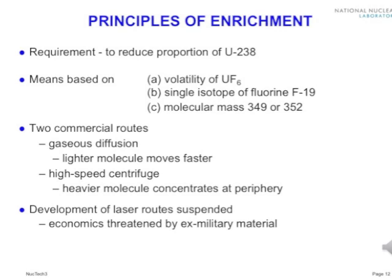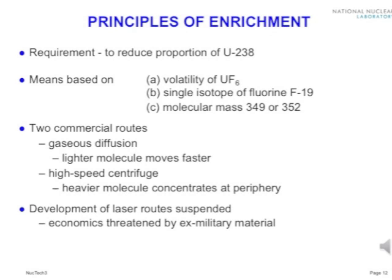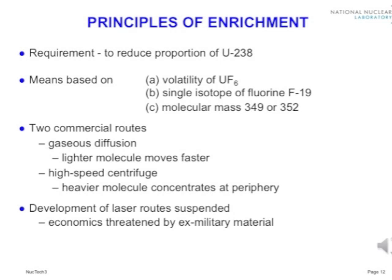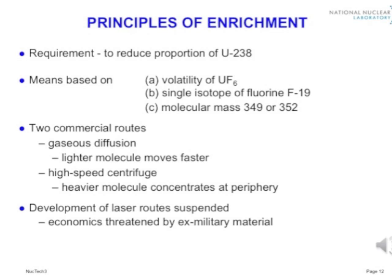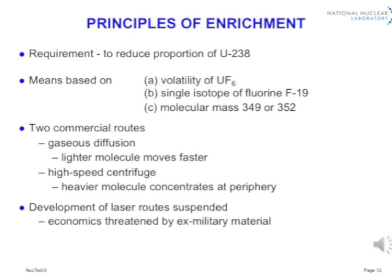Both enrichment methods depend on the fortunate coincidence that uranium forms a volatile hexafluoride, and that fluorine has only one stable isotope of mass number 19. Consequently, the processes are concerned with only two molecular masses: 349 and 352. In the vapour phase, the lighter molecules on average move faster by a factor of 1.0043 — the square root of the mass ratio. When uranium hexafluoride is passed through a porous membrane, the emerging vapour has a very slightly higher proportion of U-235 than that which remains behind. That is the basis of the first enrichment process. The second, much more efficient, is based on high-speed centrifuges in which the heavier isotope favours the periphery.